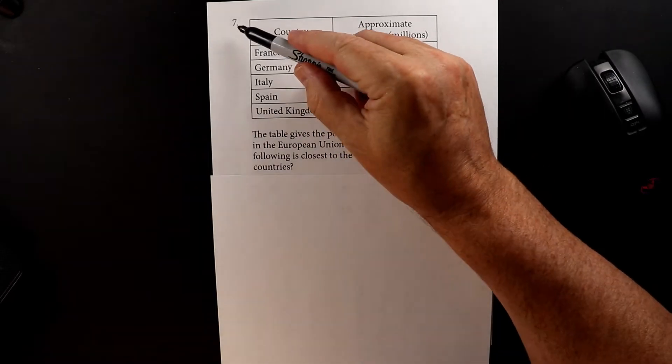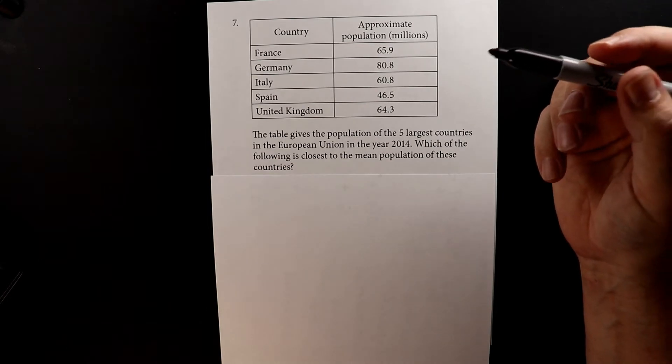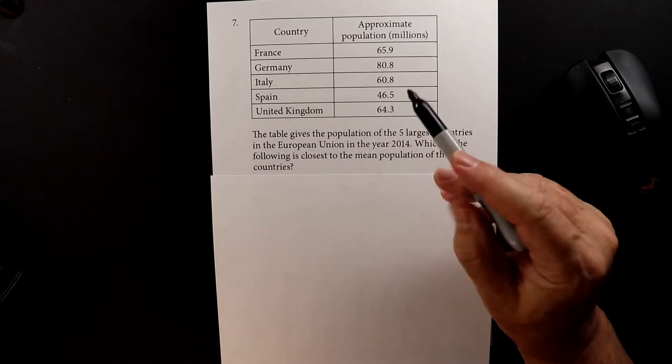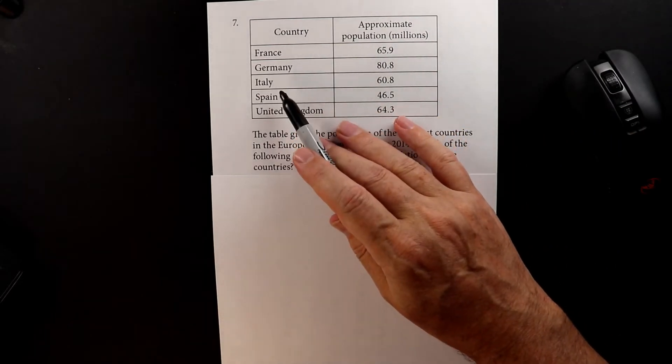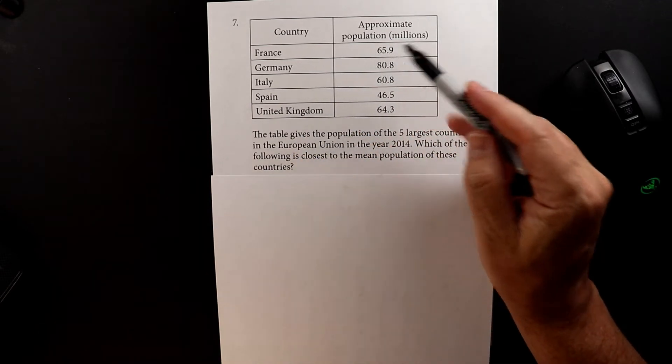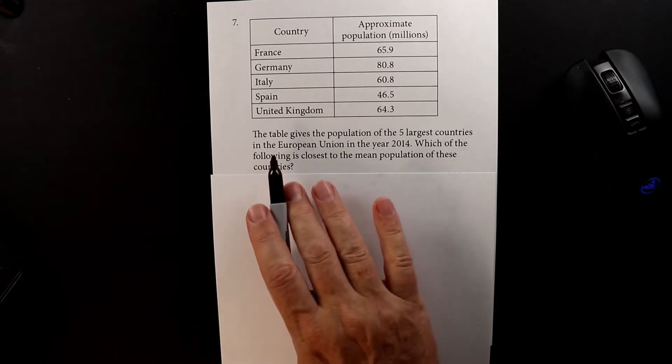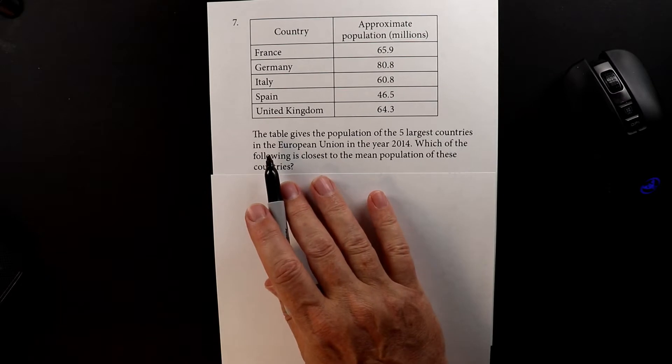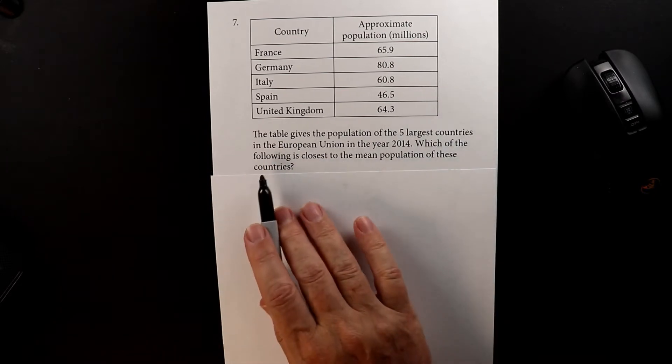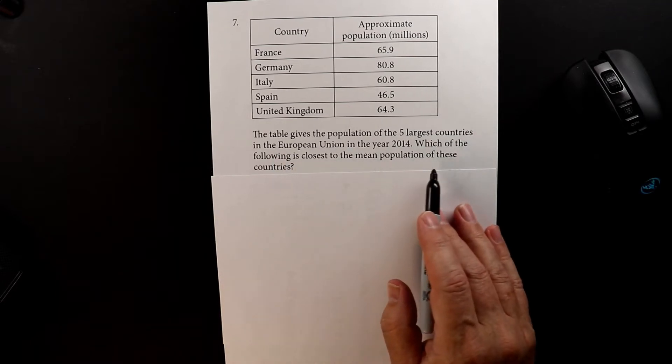This is number seven for the second acuplacer test. We have a table here where it lists the approximate population in millions for France, Germany, Italy, Spain, and the United Kingdom. The table gives the population of the five largest countries in the European Union in the year 2014. Which of the following is the closest to the mean population of these countries?